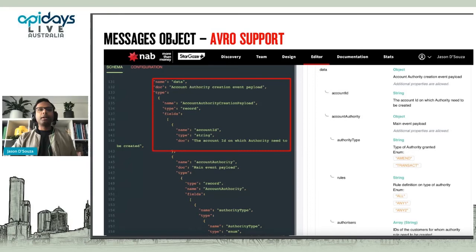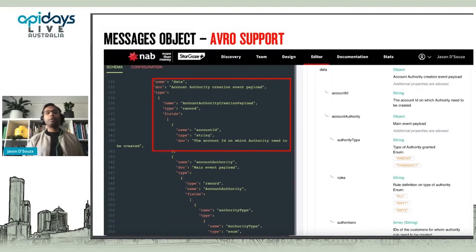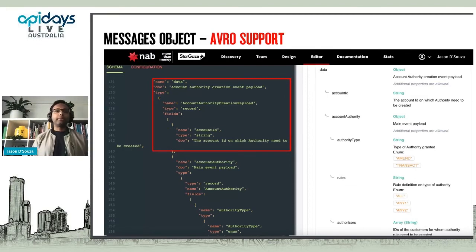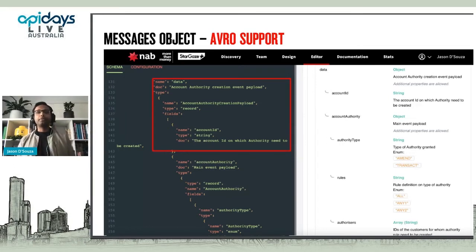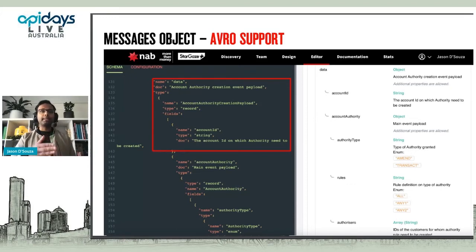The last part with AsyncAPI that's really critical for us is Avro support — native Avro support. We use Avro to serialize our data within our Kafka event streams, so maintaining one schema standard makes a lot of sense. It removes any chance of errors. We use our schema registries, and making sure the consumers see that what's described here is exactly what they're going to get — it's critical.